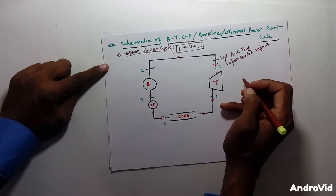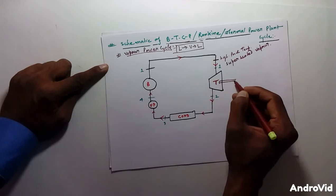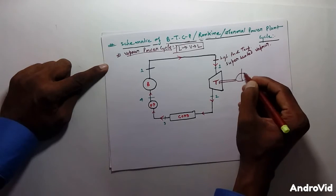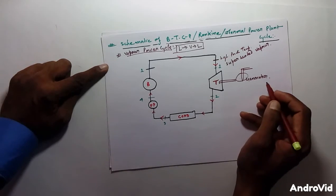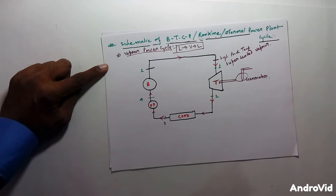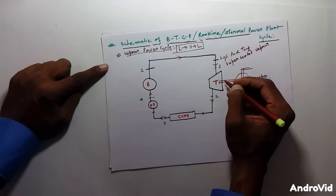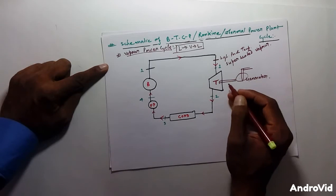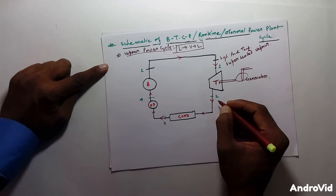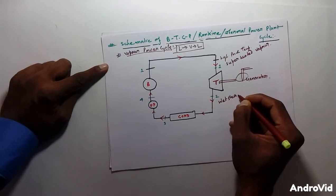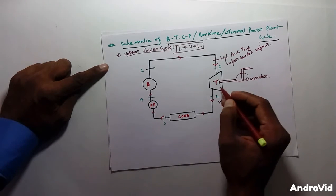When this high pressure and temperature superheated vapor enters the turbine and strikes the blades, the turbine blades rotate. The shaft of the turbine is connected to a generator, so the shaft of the generator rotates and electricity is produced — that's why we call it a power cycle. As the superheated steam does work on the turbine, it transforms into wet steam.